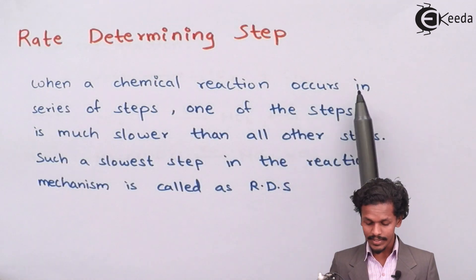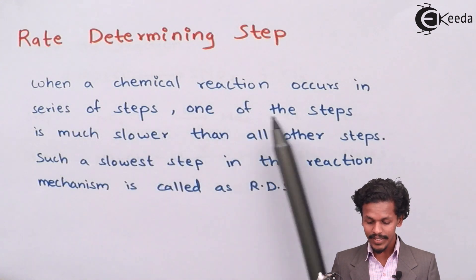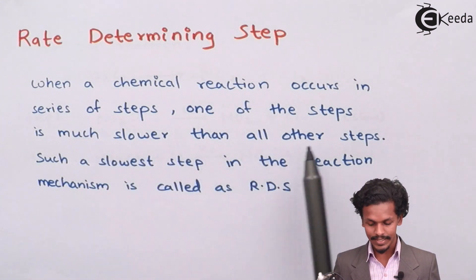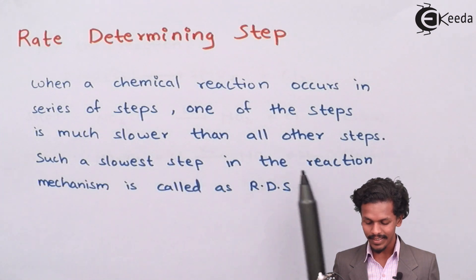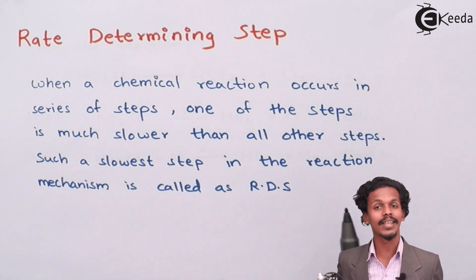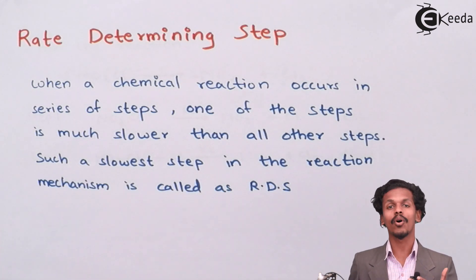When a chemical reaction occurs in series of steps, one of the steps is much slower than the other steps. Such a slower step in the reaction mechanism is called as rate determining step or RDS.